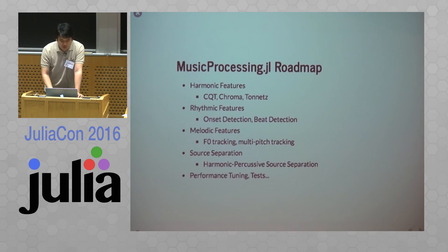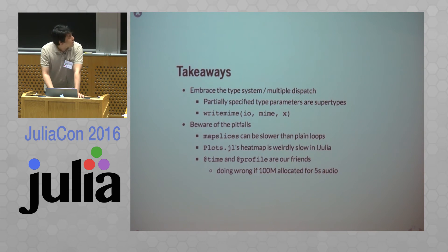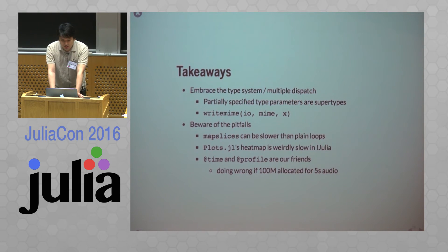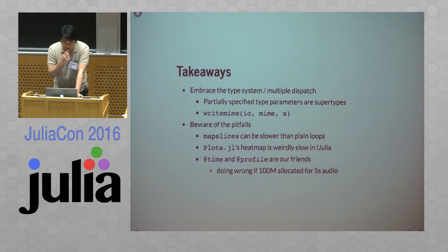This library is still in a very early stage. I'd like to add more features from Librosa and other audio processing libraries in the future, as well as performance tuning and tests. My takeaways from the experience of making a Julia library: I really enjoyed embracing the type system and multiple dispatch. I like that partially specified type parameters act as supertypes of fully specified types, which makes writing generic functions very concise and easy.